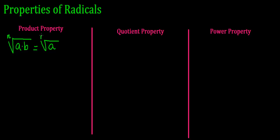In other words, if I have a product inside of a radical, I can separate that product into its own separate radicals. This only works if it's a product, if I'm multiplying.